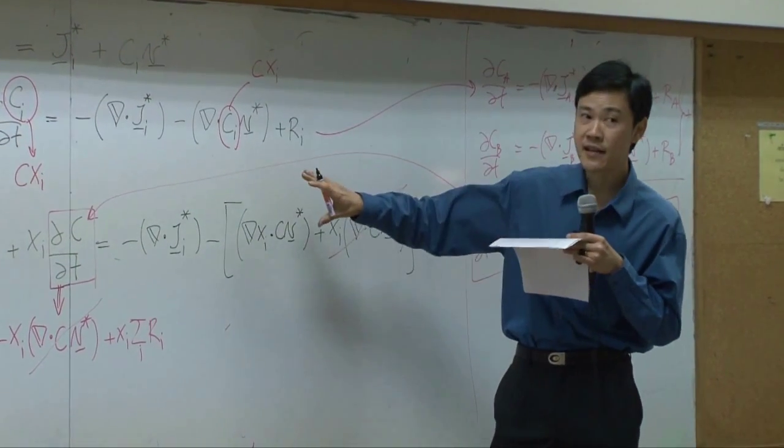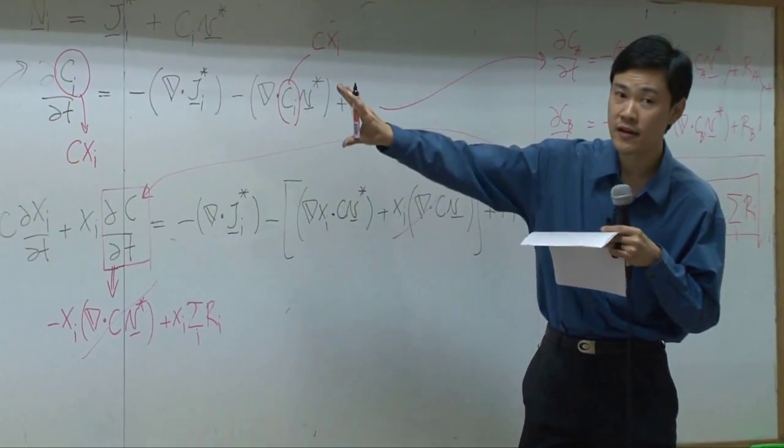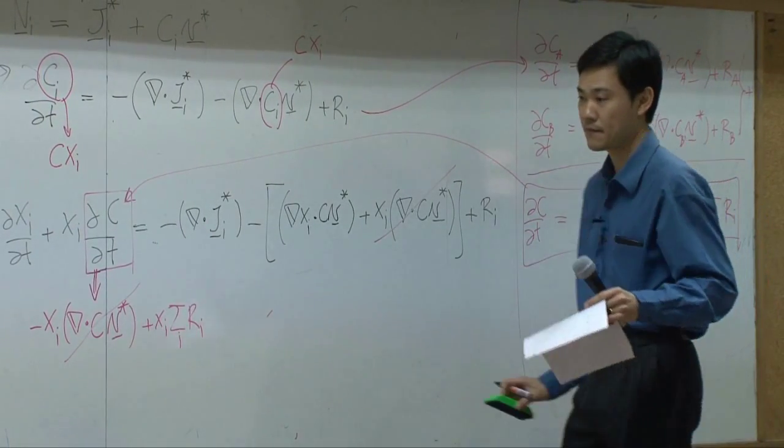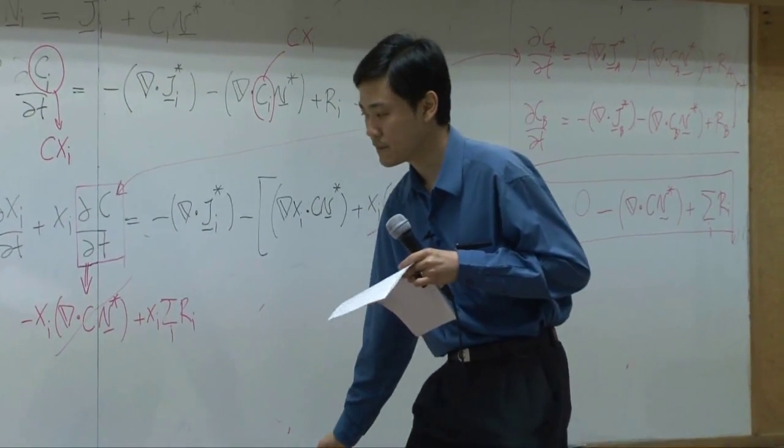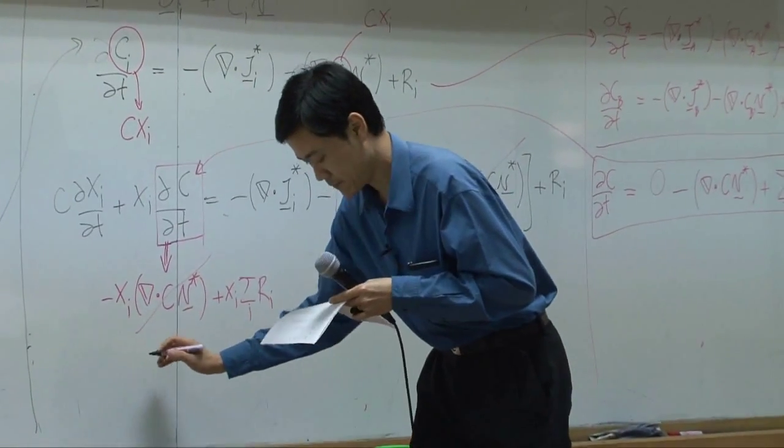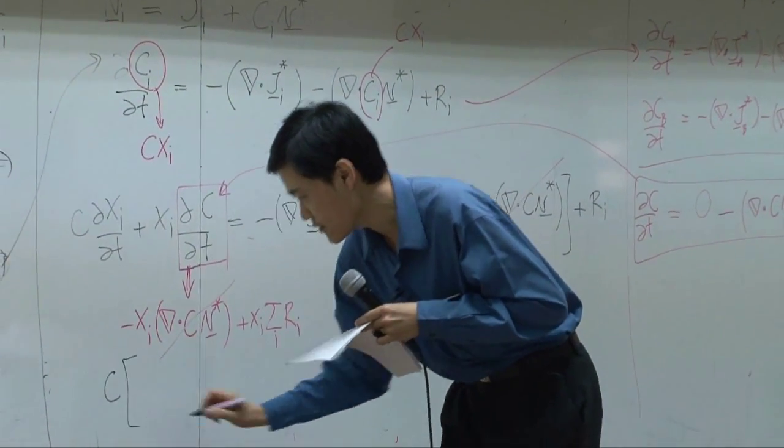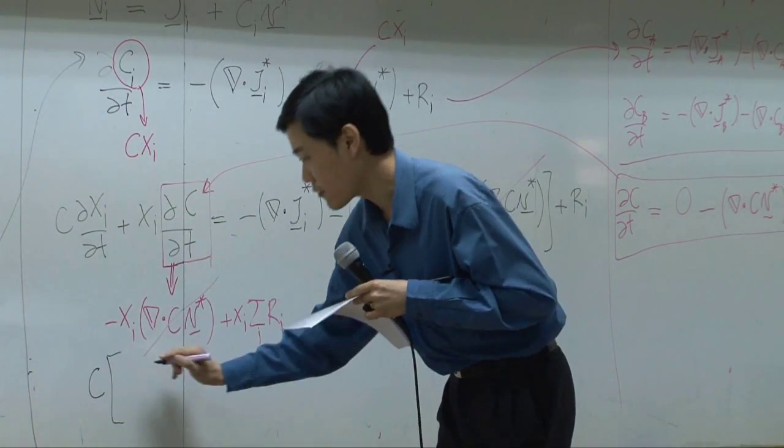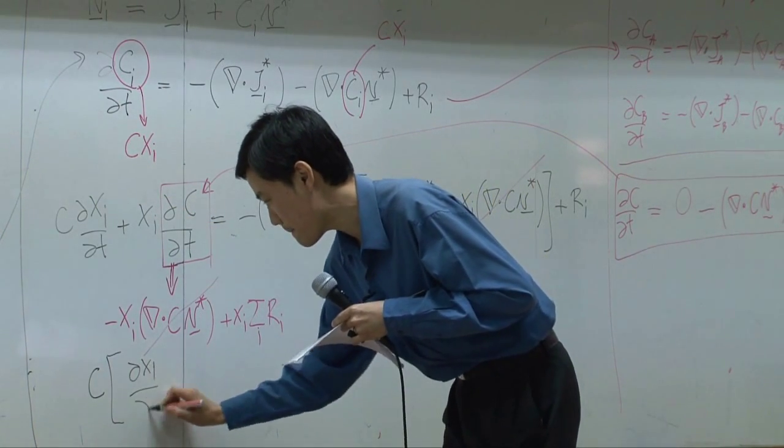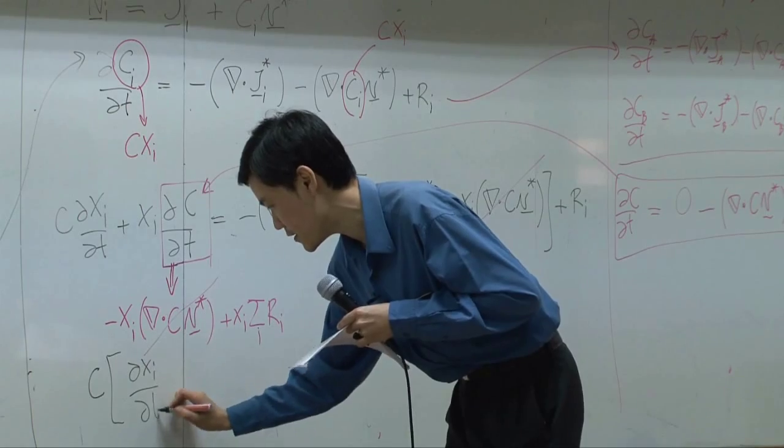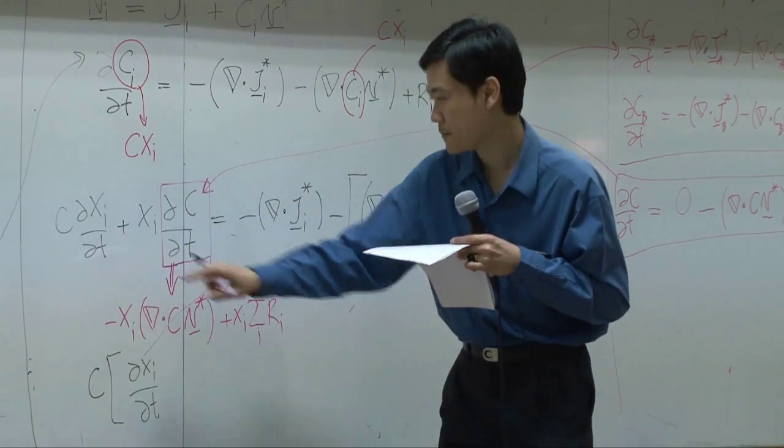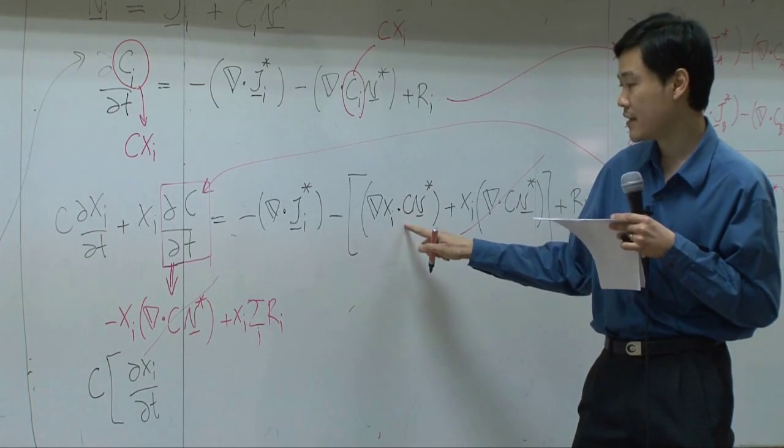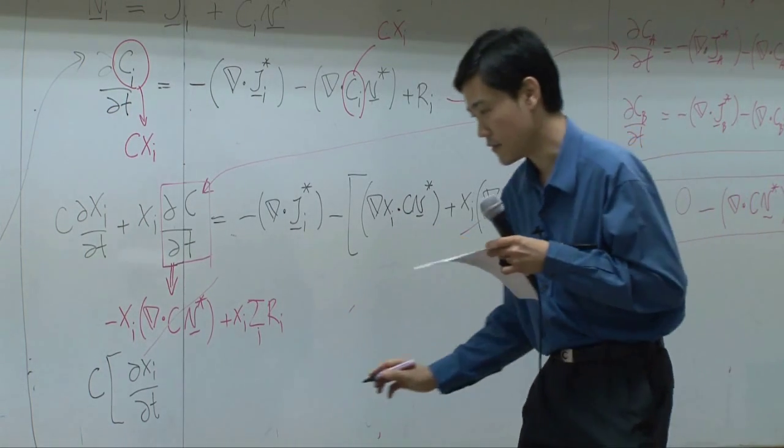Then I can take this term to the left-hand side. You have c as a common term. This part would have xi dxi by dt, this is this term. I bring this term to the left-hand side and take c out.